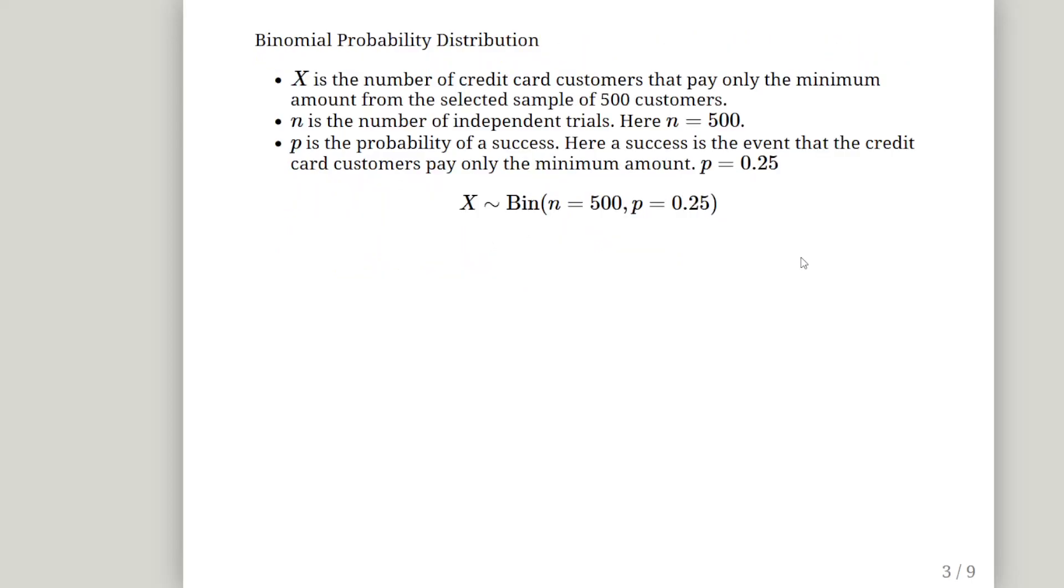Now I think you probably have guessed that this is a binomial distribution. X is the number of credit card customers that pay only the minimum amount due from our sample. n is the number of independent trials, the 500 customers, so n is 500. p is the probability of a success. A success here is the event that they pay only the minimum amount, and the probability of that success is 0.25. So here we have our X random variable which is a binomial random variable with n equals 500 and p equals 0.25. This is conventional mathematical notation.